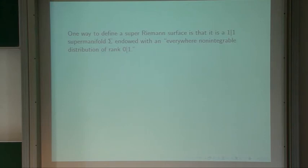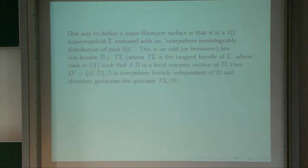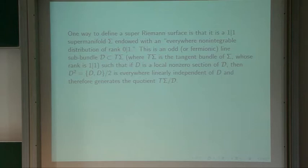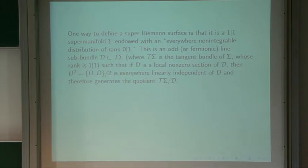We call this sub-bundle curly D. Sigma will be our super-Riemann surface; its tangent bundle T-sigma is a bundle of rank 1|1. The distribution curly D has rank 0|1. We want it to be completely non-integrable: integrability would mean that for a section D of curly D, D-squared is zero modulo D. Non-integrability means D-squared is linearly independent of D. Since we're in dimension 1|1, one even and one odd generator form a basis of the tangent bundle, so D-squared is everywhere linearly independent of D and generates the quotient, i.e., the tangent bundle modulo curly D.